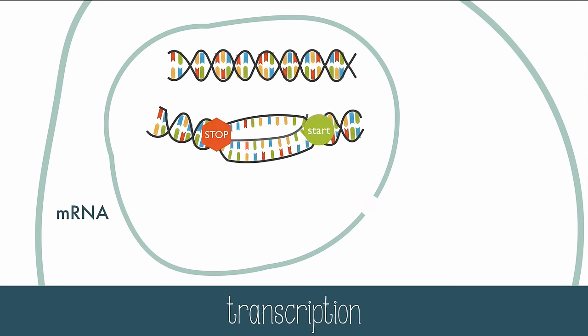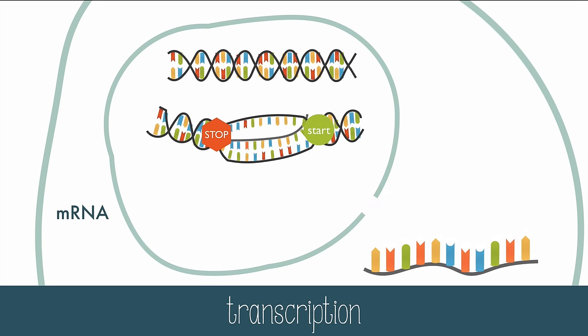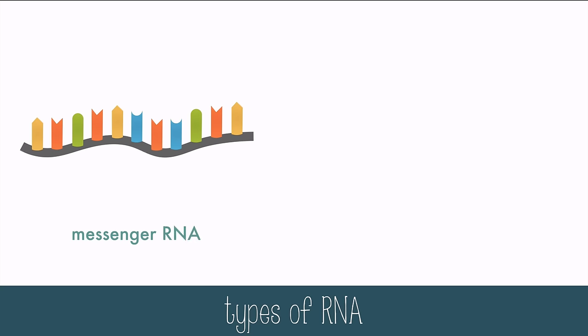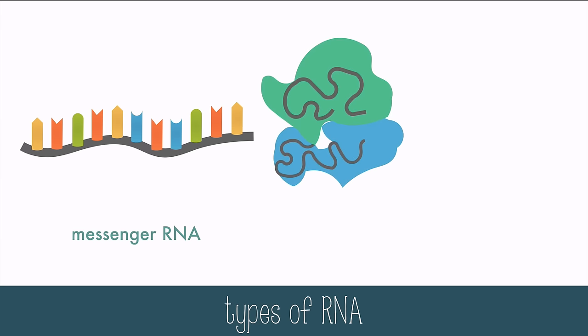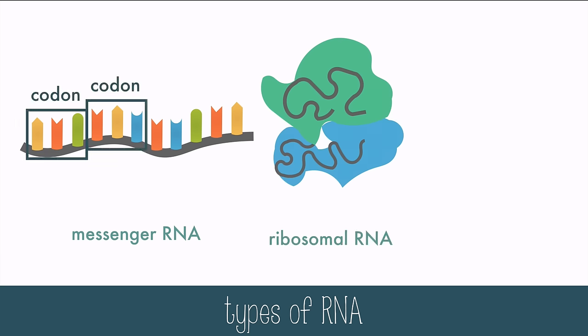After the mRNA is formed, it moves out of the nucleus through a nuclear pore and goes into the cytoplasm. There are three different types of RNA. The purpose of the mRNA is to get the protein code out of the nucleus without pulling the DNA out. Then the mRNA will need to find a ribosome in the cytoplasm. Ribosomes can be found on the rough ER or floating in the cytosol. mRNA is read three bases at a time, and these three bases are called codons.